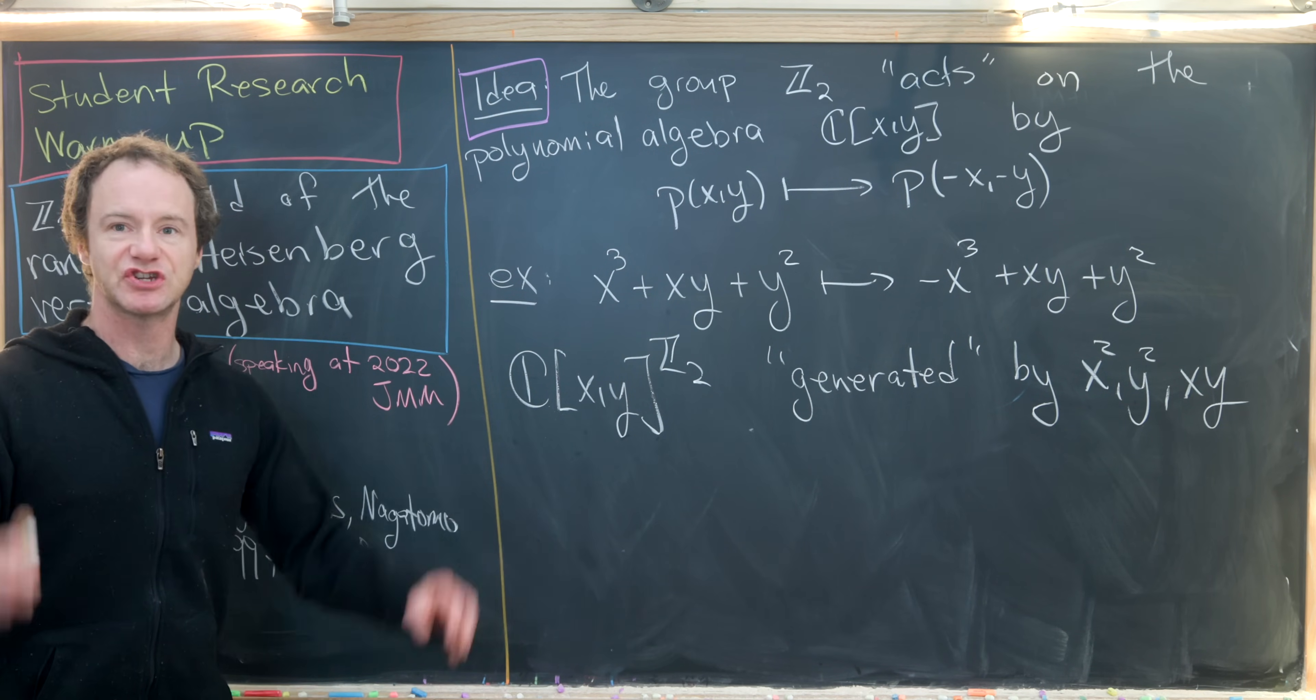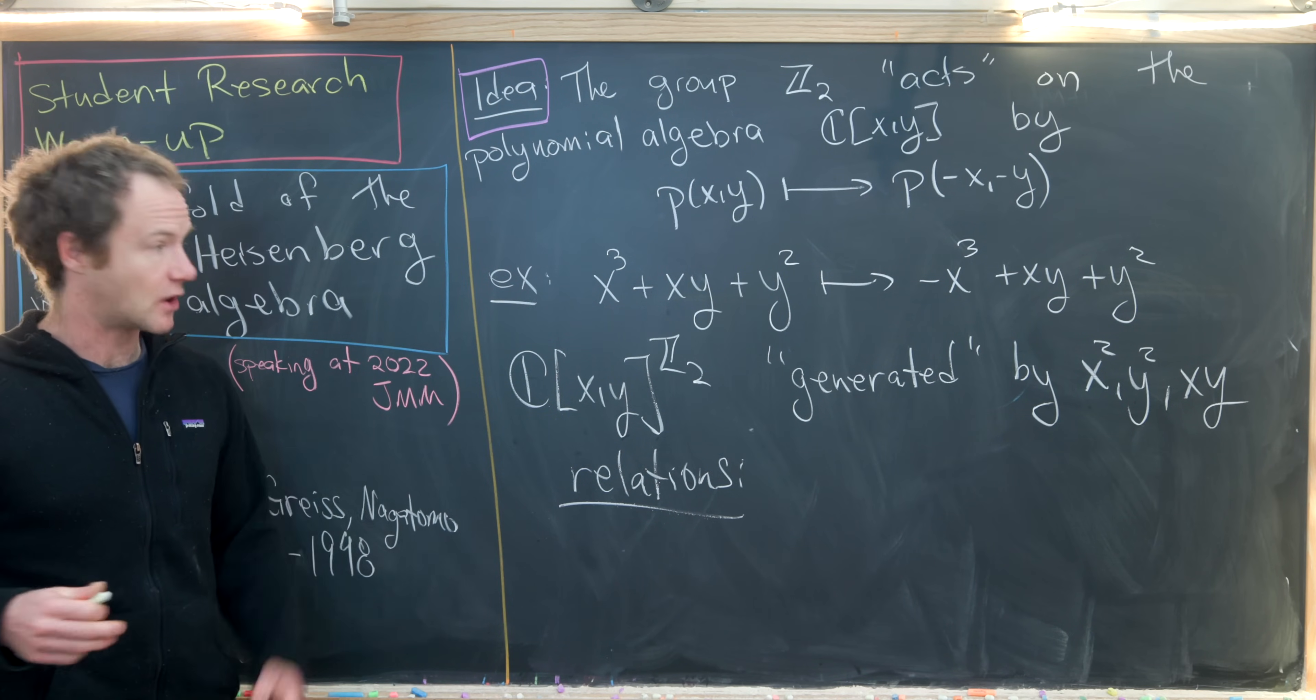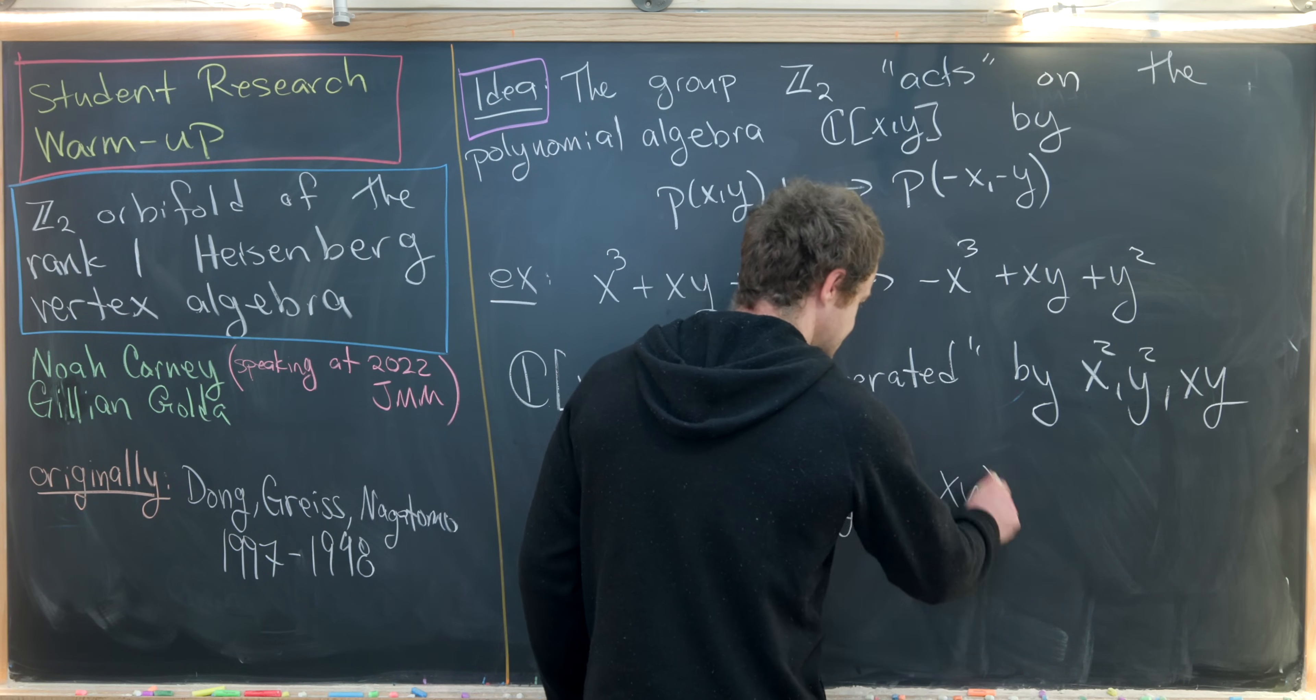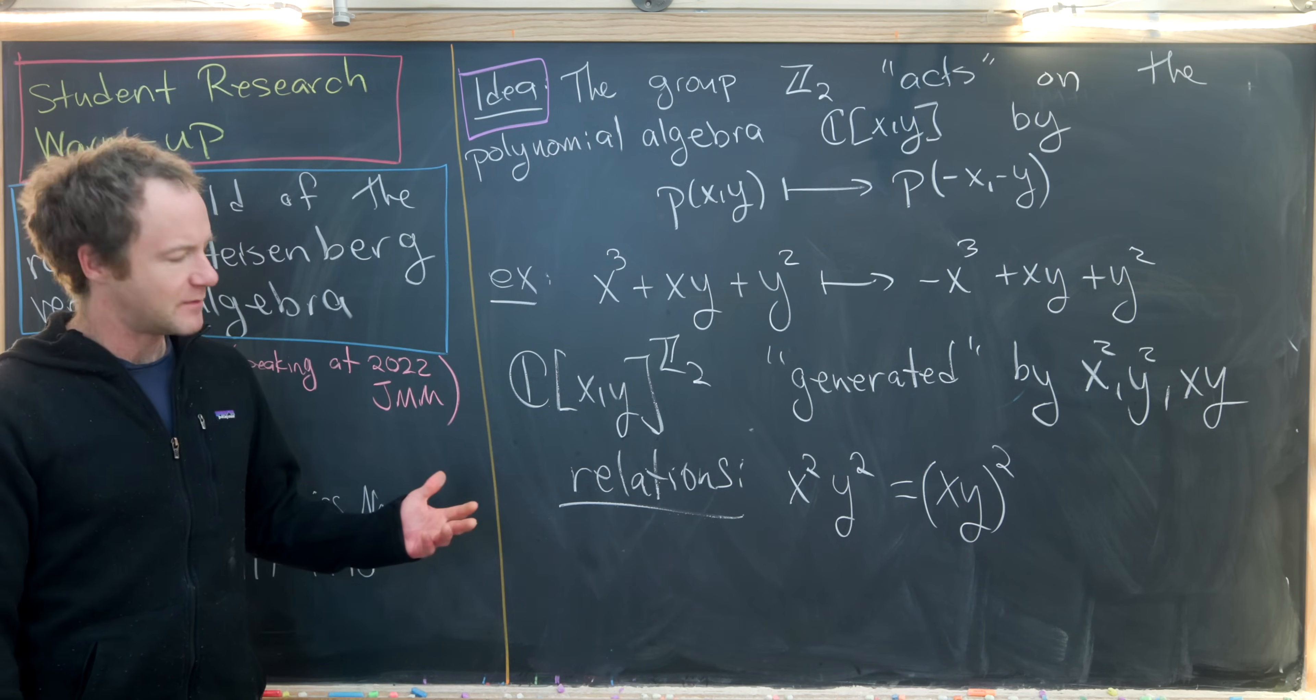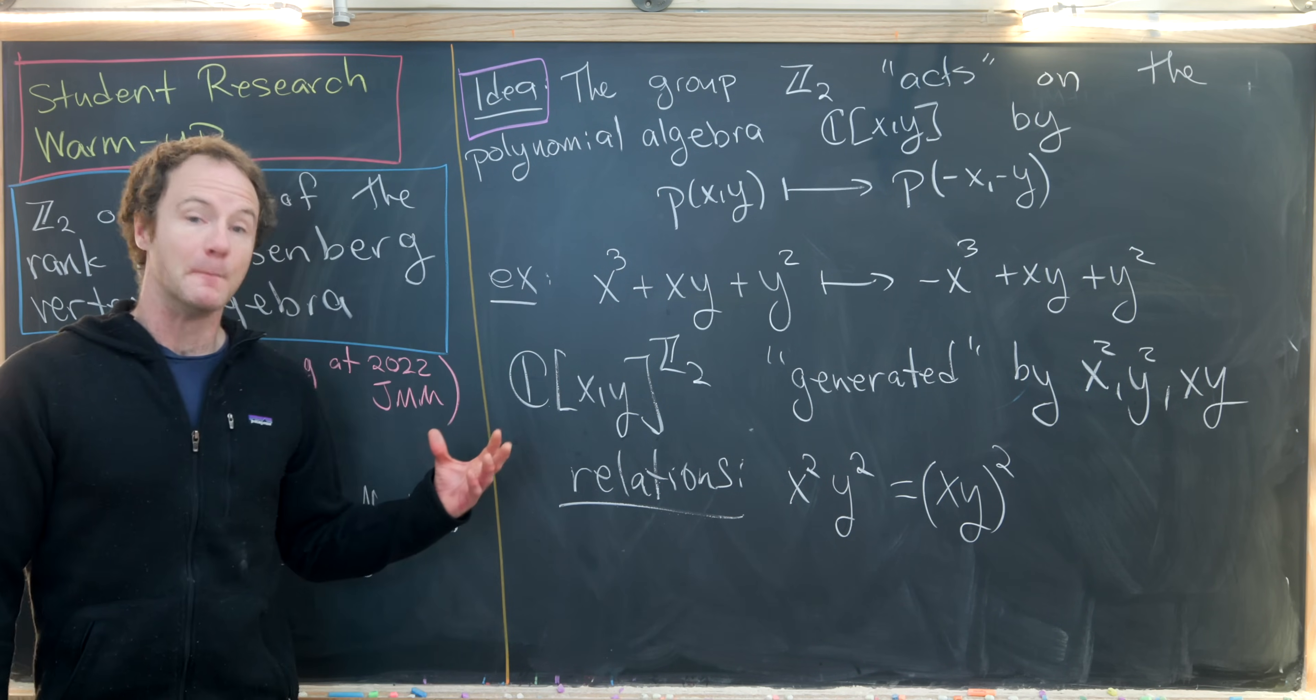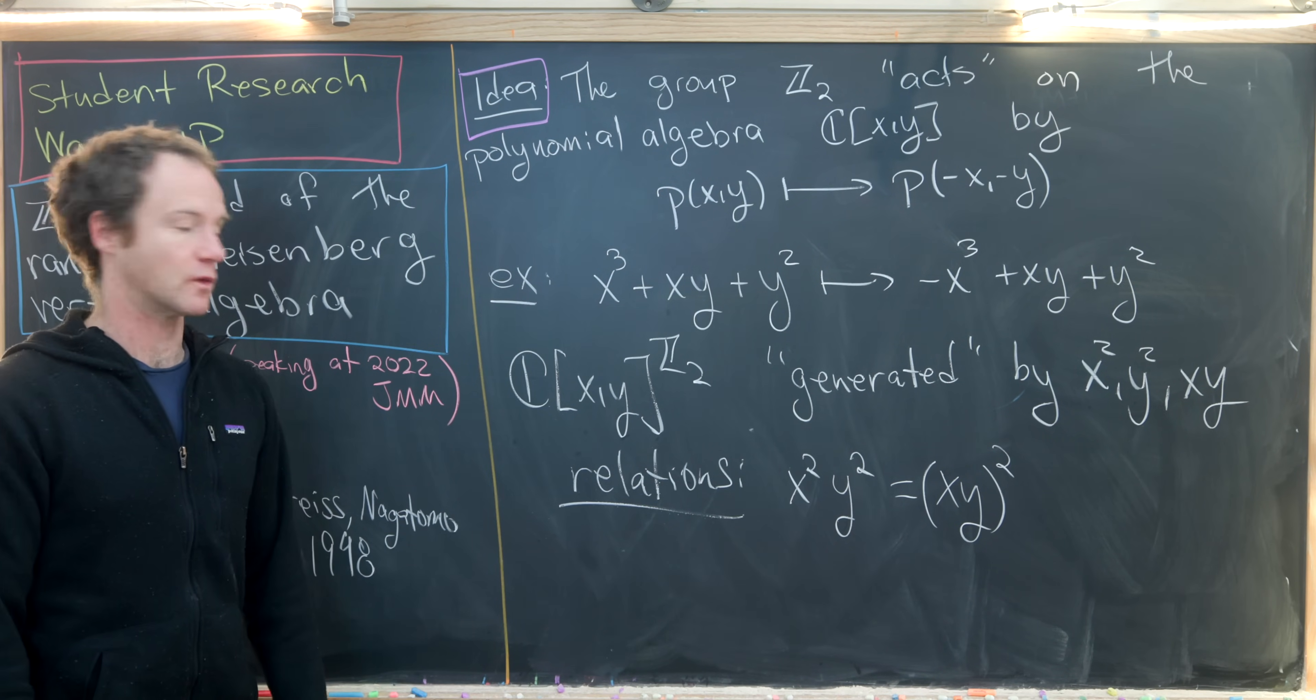But let's notice that this generation is not free. There are relations. There's one relation here that kind of generates all of the relations, given by: if we take X squared and multiply it by Y squared, that's the same thing as taking XY and squaring it. We can use X squared as often as we like, Y squared as often as we like, but we only really need to use XY once because if we use XY twice, we can rewrite it in terms of X squared and Y squared.